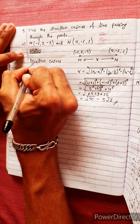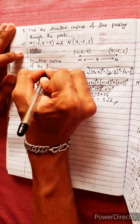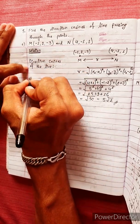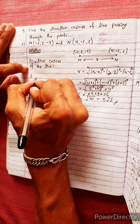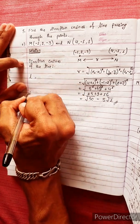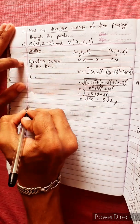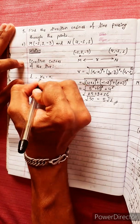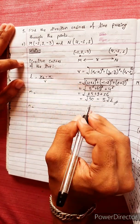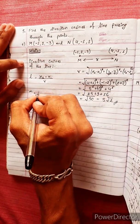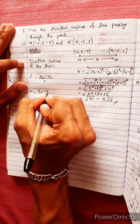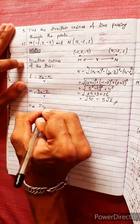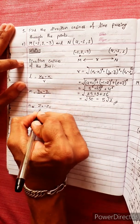Now for the direction cosines of the line: L equals (x2 minus x1) divided by R, M equals (y2 minus y1) divided by R, and N equals (z2 minus z1) divided by R.